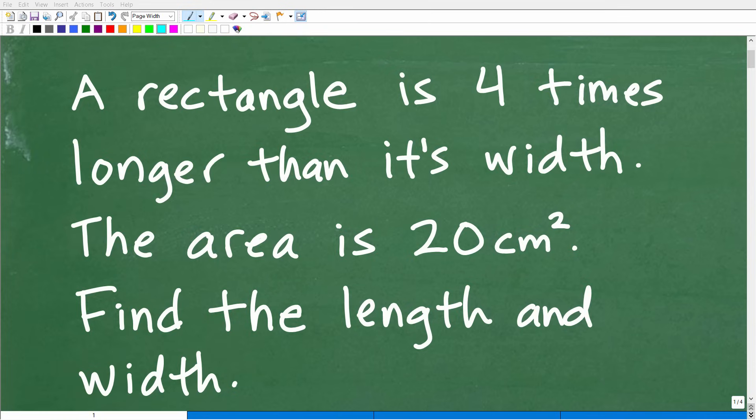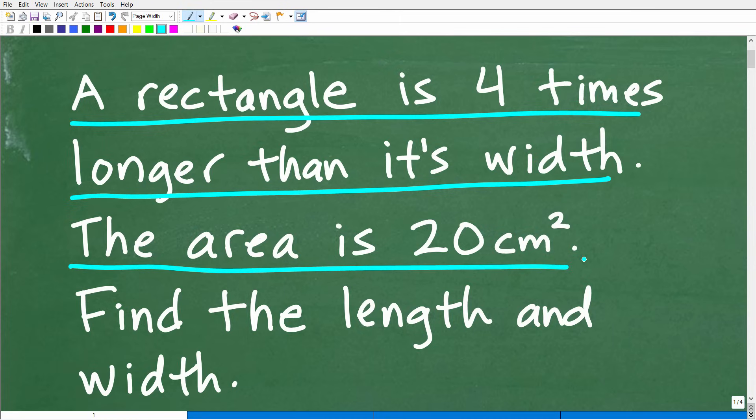Okay, so get ready to put your math skills to work to solve this interesting little math word problem. Matter of fact, let me go ahead and read the problem. It is the following: A rectangle is four times longer than its width. The area of this rectangle is 20 centimeters squared. Find the length and the width of the rectangle.